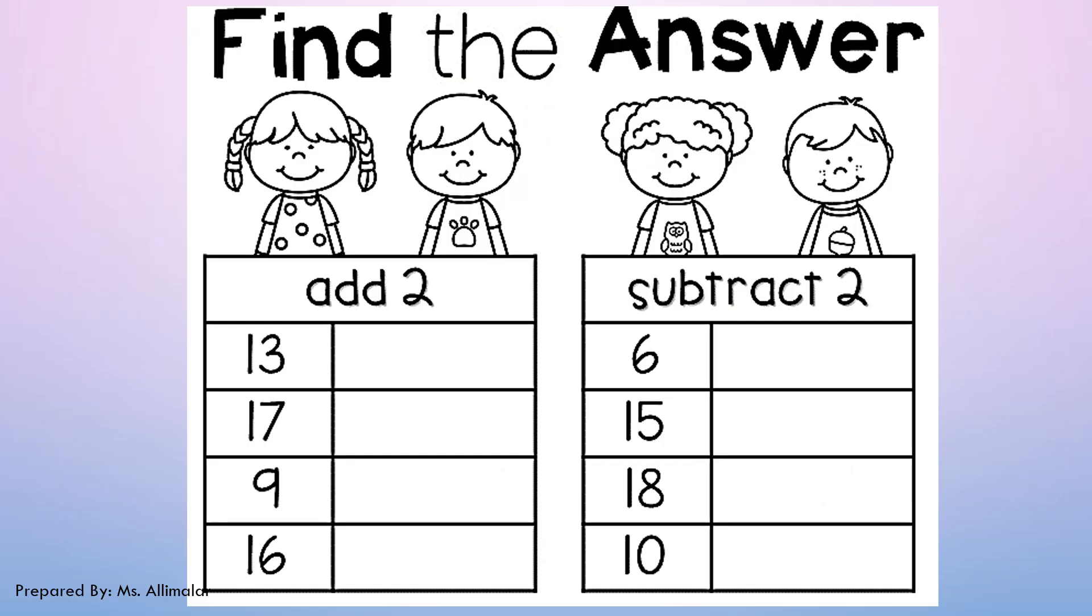Okay guys, find the answer. If you say here, there's a column here, add 2. There's a column here, subtract 2. Now what you have to do is, you have to take each number here. You must add with 2 and write the answers here accordingly. Now this is 13. 13 add 2, write the answer here. 13 add 2, add means plus.